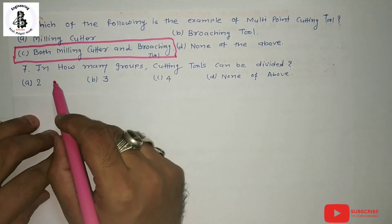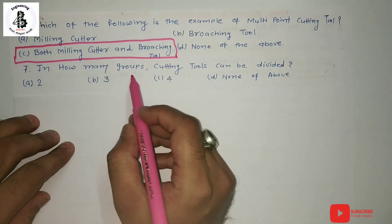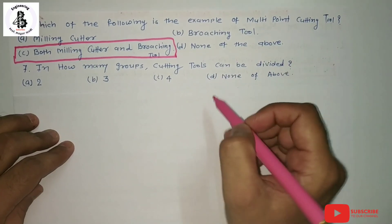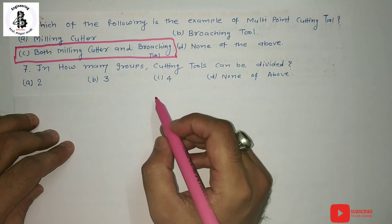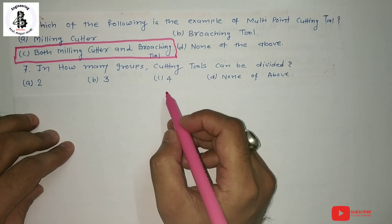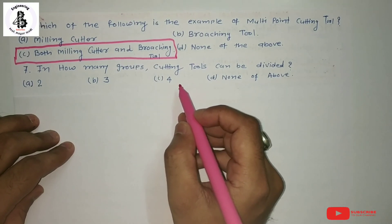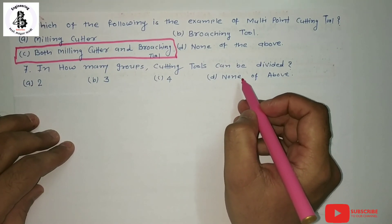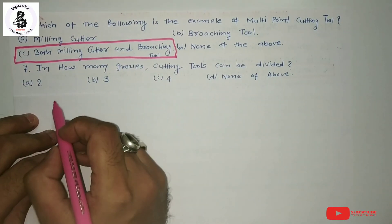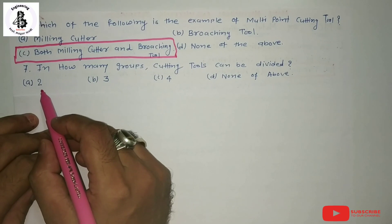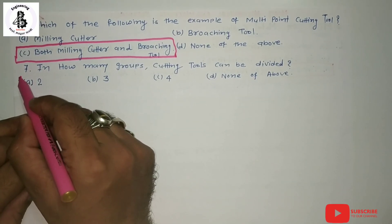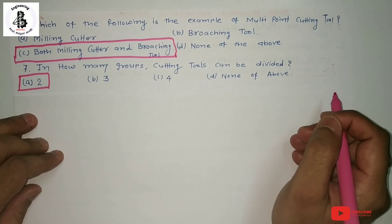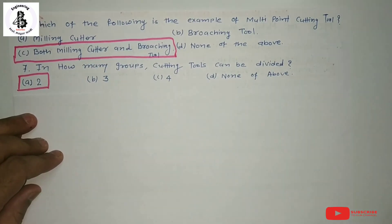Seventh question: Into how many groups can cutting tools be divided? As previously discussed, tools are divided into two categories: single point cutting tools and multi-point cutting tools. So the answer is 2.